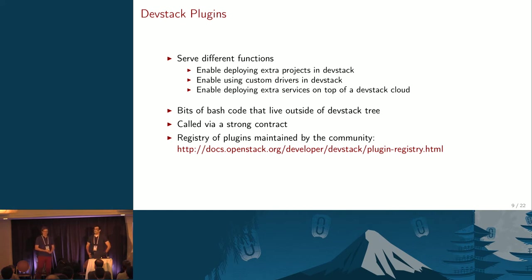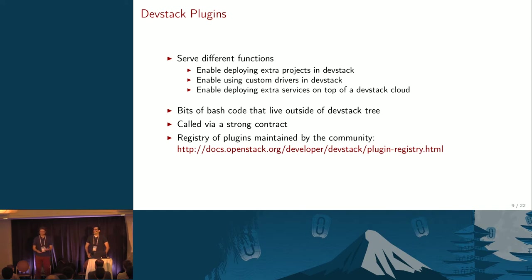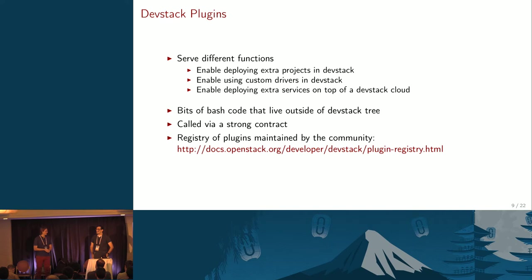DevStack plugins actually serve three different functions, so there are three different types. One is: I have my project — it's not one of the core six — and I want it to actually be deployed in DevStack as part of the cloud I'm deploying there for testing. With the plug-in, I can hook my project into the deployment process. The other type is using different configuration in DevStack or in one of the existing services, like a custom driver — a different hypervisor in Nova, a different Cinder back-end, or some networking configuration.